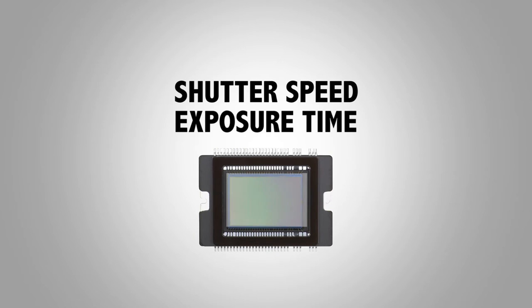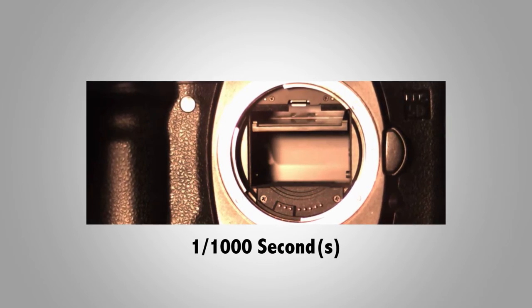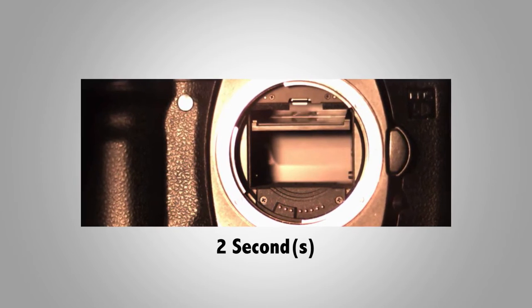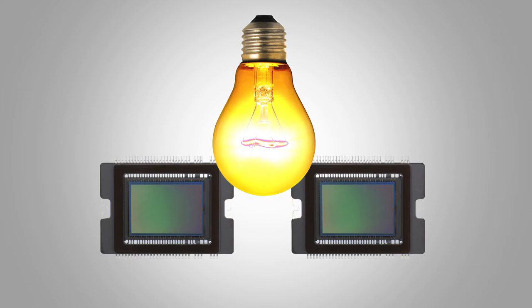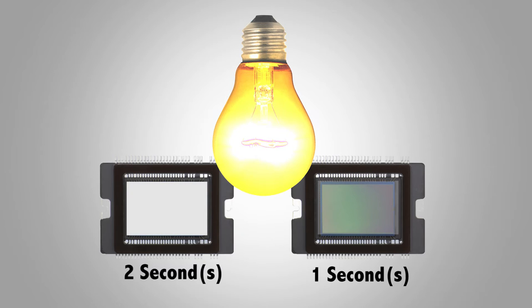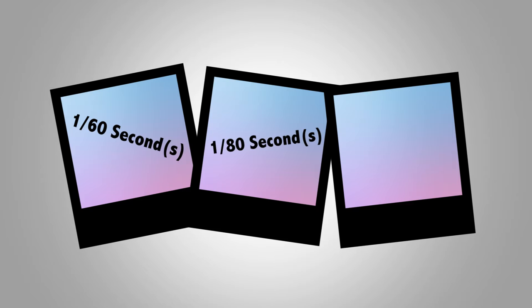Now we're going to look at what shutter speed is in photography. Shutter speed, also known as exposure time, is the length of time of exposing light to a camera sensor. It represents the time that a camera shutter is open while taking a photograph. The amount of light which reaches the sensor depends on the exposure time. More light reaches the sensor if it is open for 2 seconds compared to only 1 second. The regular amount of exposure time or shutter speed is considered to be around 1/6th or 1/8th of a second.